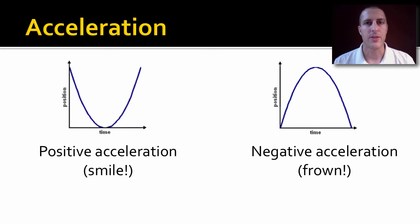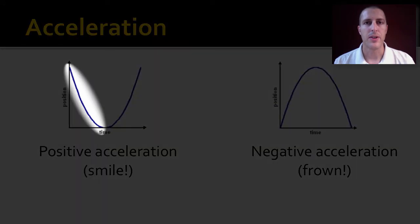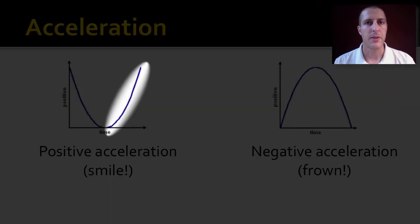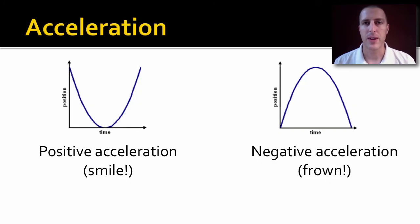With acceleration, we said that if there's a curve, there's acceleration. It's easy to know if there's positive acceleration or negative acceleration. In the graph on the left, you can see we have positive acceleration because we start slowing down in the negative direction and then start speeding up in the positive direction. That means we have positive acceleration. A shortcut: it looks kind of like a smile. Smiles are positive, right?